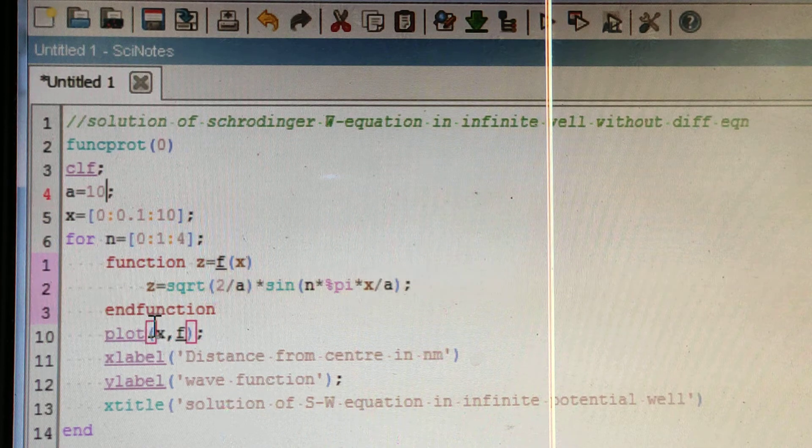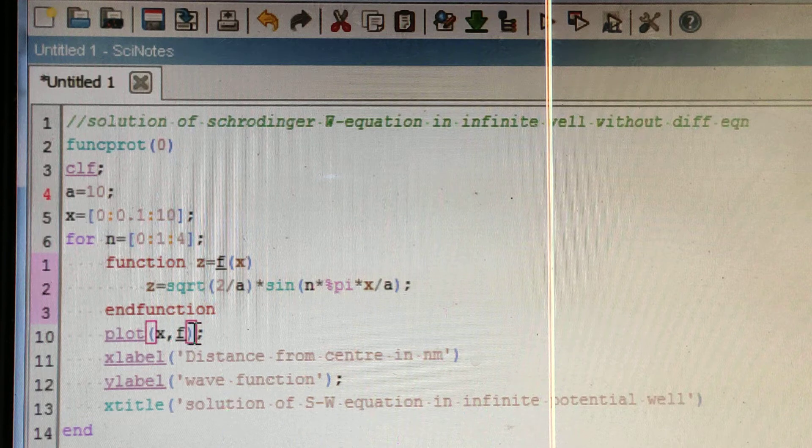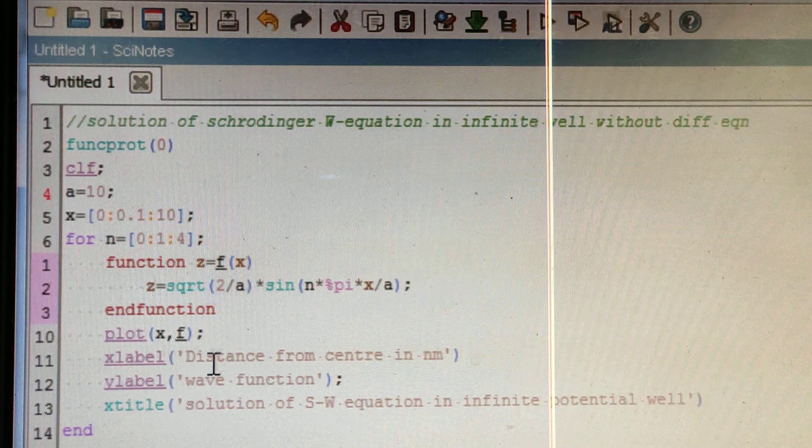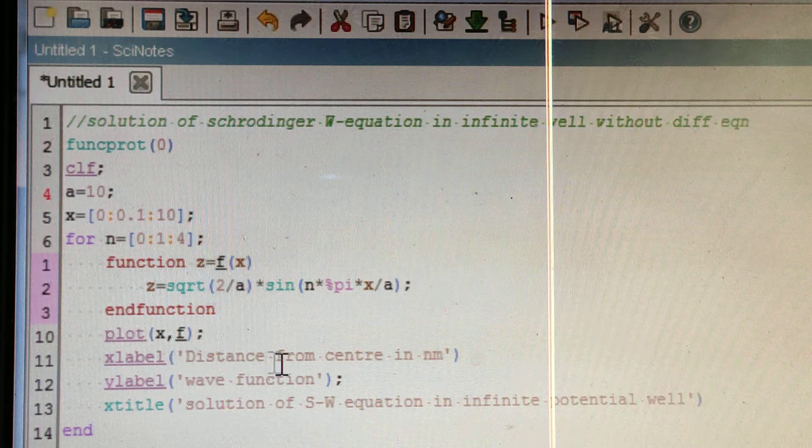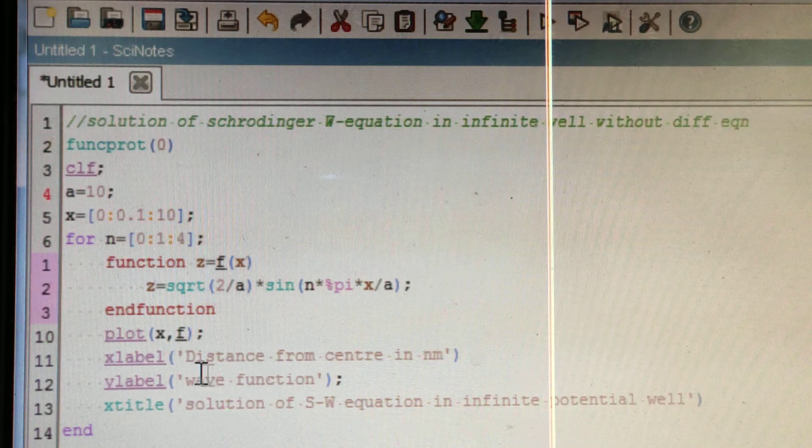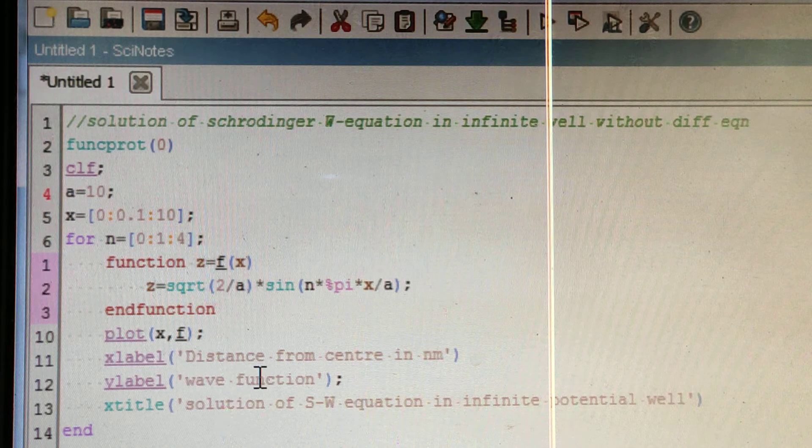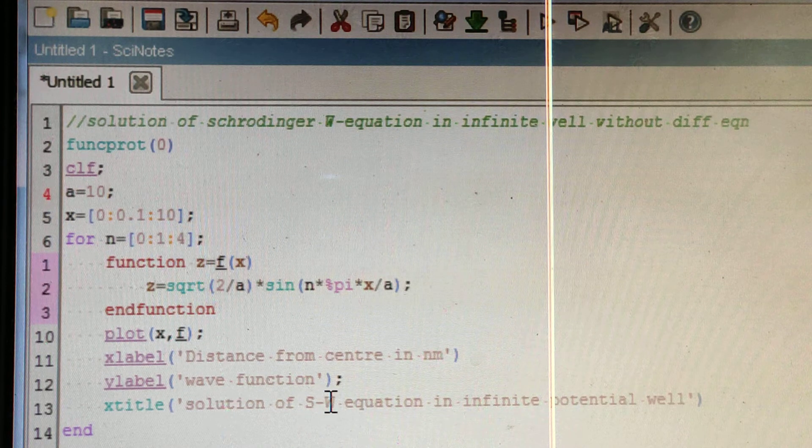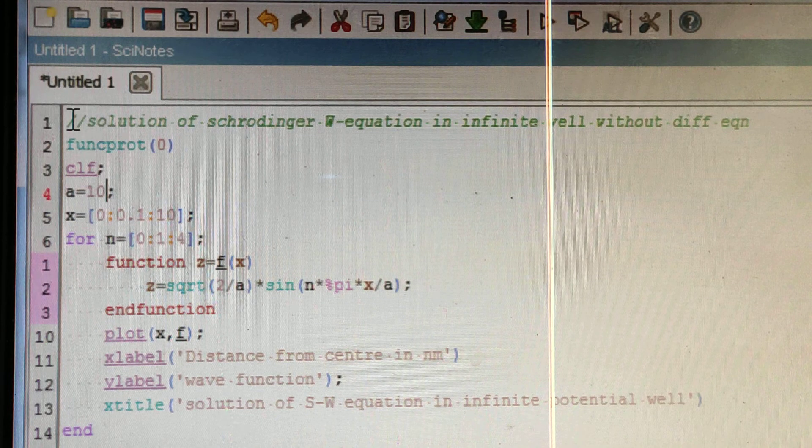This is our function. Then you have to plot the graph between x and z. On the x-axis, I have given distance from the center, and on the y-axis, that is wave function psi of x. I have given a title 'SW', which means Schrodinger wave equation.